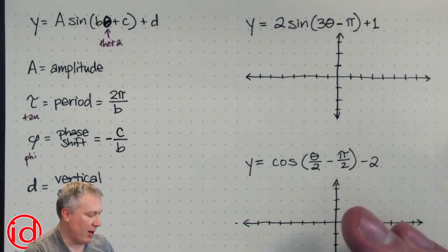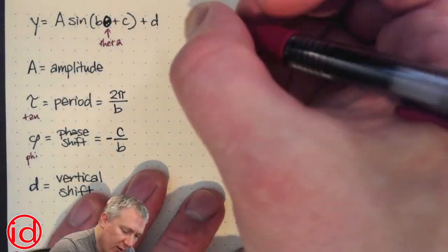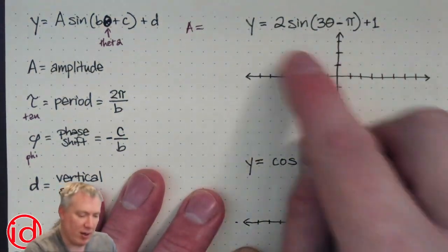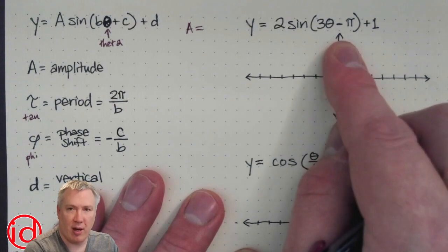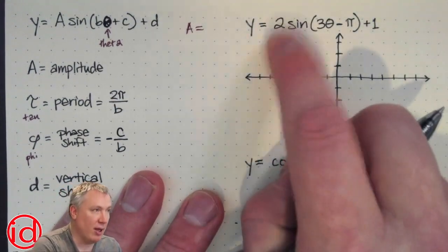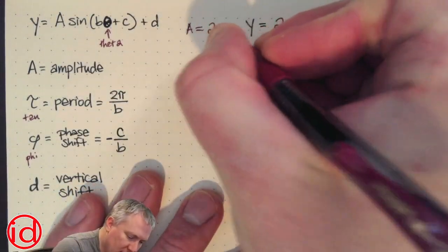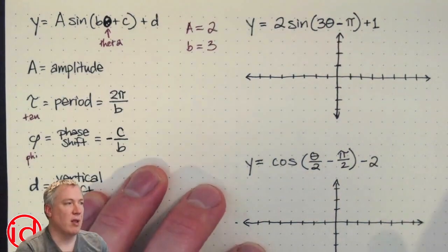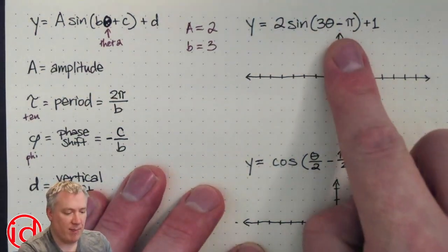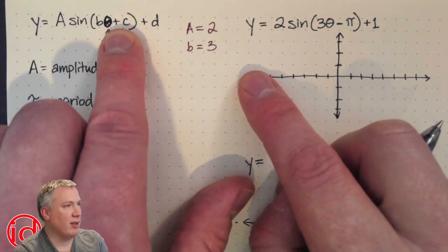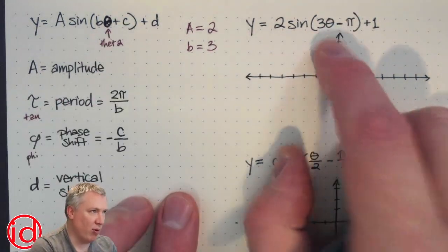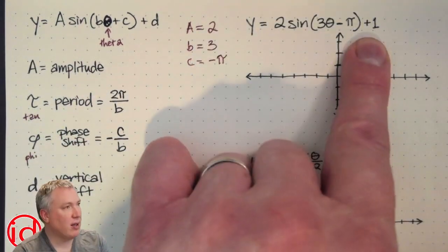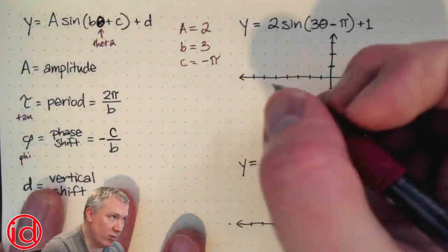So what we're going to do, we're going to start just by looking at some examples and calculating. Let's start with this one here. If I go up to this equation here, y equals 2 sine 3θ minus π plus 1, I notice immediately a is 2. And b, that's going to be in front of theta, that's 3. And then minus π. Now, since this is plus c, and this is minus, that minus is important here. So our c is negative π. And then lastly, what's outside the parentheses, so plus 1. So that's what d is, plus 1.